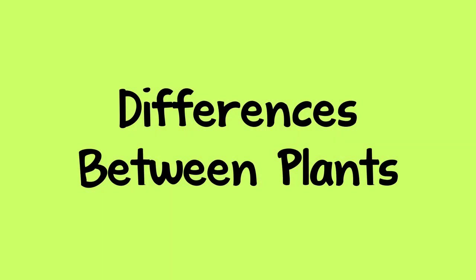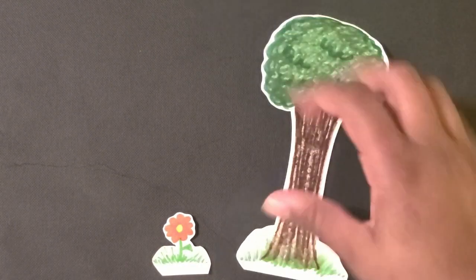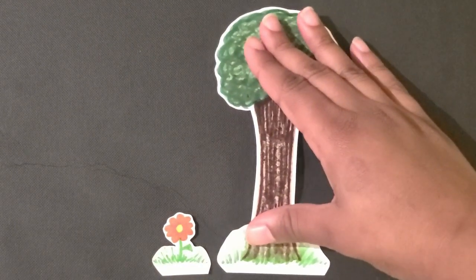You can help a child learn about plants by talking about their differences. You can start by pointing out two different types of plants. For example, you might use a flower and a tree.